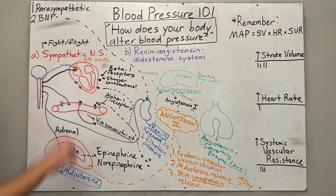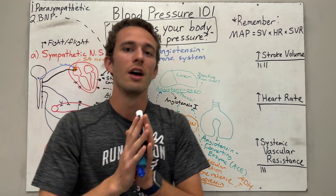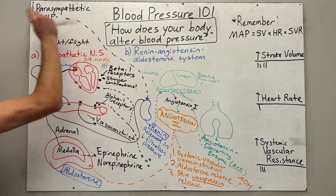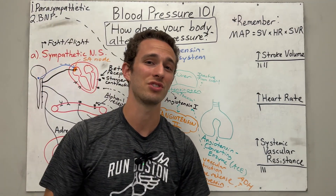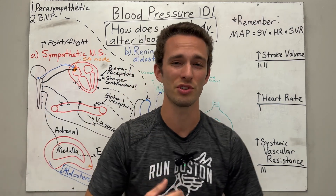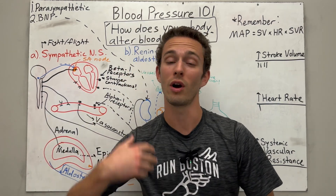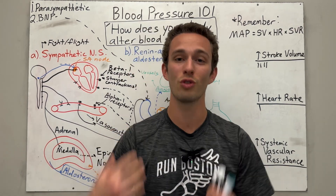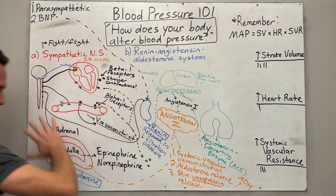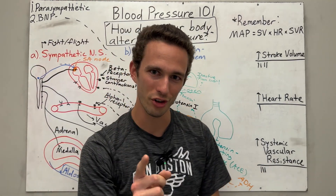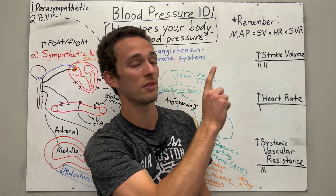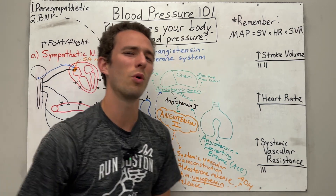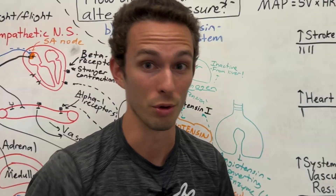Those are the two main ways your body can decrease blood pressure naturally. The problem is: if we have all of these ways to increase blood pressure but very few ways to decrease it, that's why we need several different blood pressure medications — because many people suffer from hypertension or high blood pressure. It's a chronic disease, very common, and very dangerous. To treat it, we need to do something to this process to lower people's blood pressure. Check out the next video to learn about those blood pressure medications and how they work.